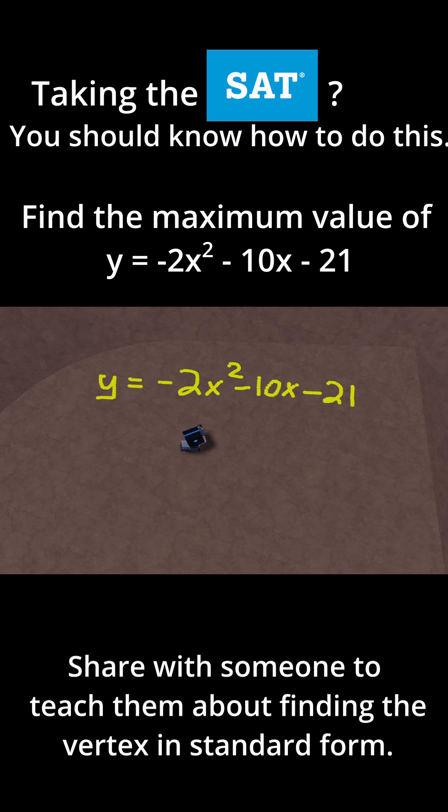This is in standard form first, because it's ax² + bx + c, and our a value of -2, that's a negative number. So in other words, this parabola is a downward-facing parabola.